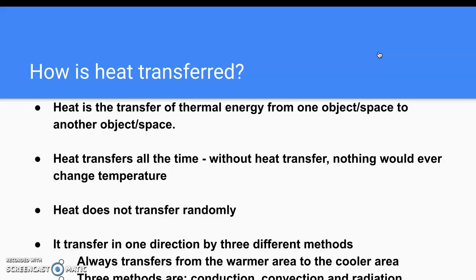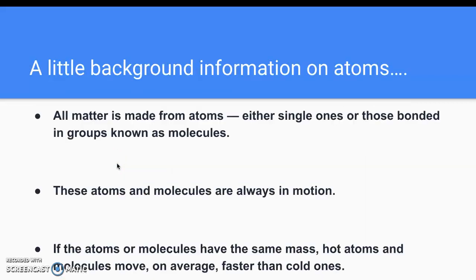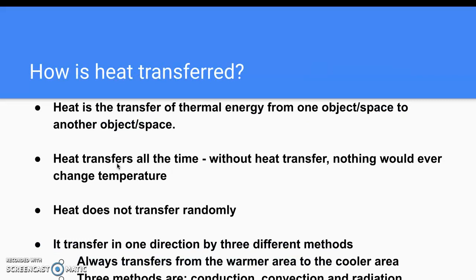And heat is actually the amount of energy that transfers from that warmer object or space to the cooler one. So heating is the process and heat is the amount. Now we know that heat is transferring all the time because if it wasn't true, then nothing would ever change temperature. But we also know heat does not transfer randomly. It always goes in one direction from the hotter area or space to the cooler one, and by one of three methods: conduction, convection, or radiation.